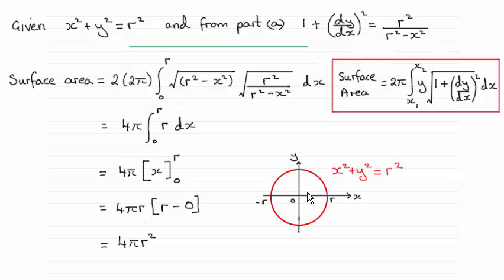the circle here, about the x-axis. And we had to show that it was 4πr², so you can see what I've done here.